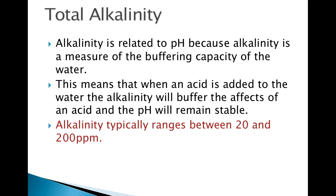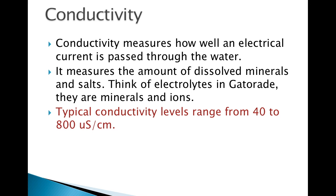Alkalinity typically ranges between 20 and 200 parts per million in Ohio's waters. Conductivity measures how well an electrical current is passed through the water. It measures the amount of dissolved minerals and salts. Think of electrolytes in Gatorade — they are minerals and ions. Typically, conductivity levels range from 40 to 800 microsiemens per centimeter.